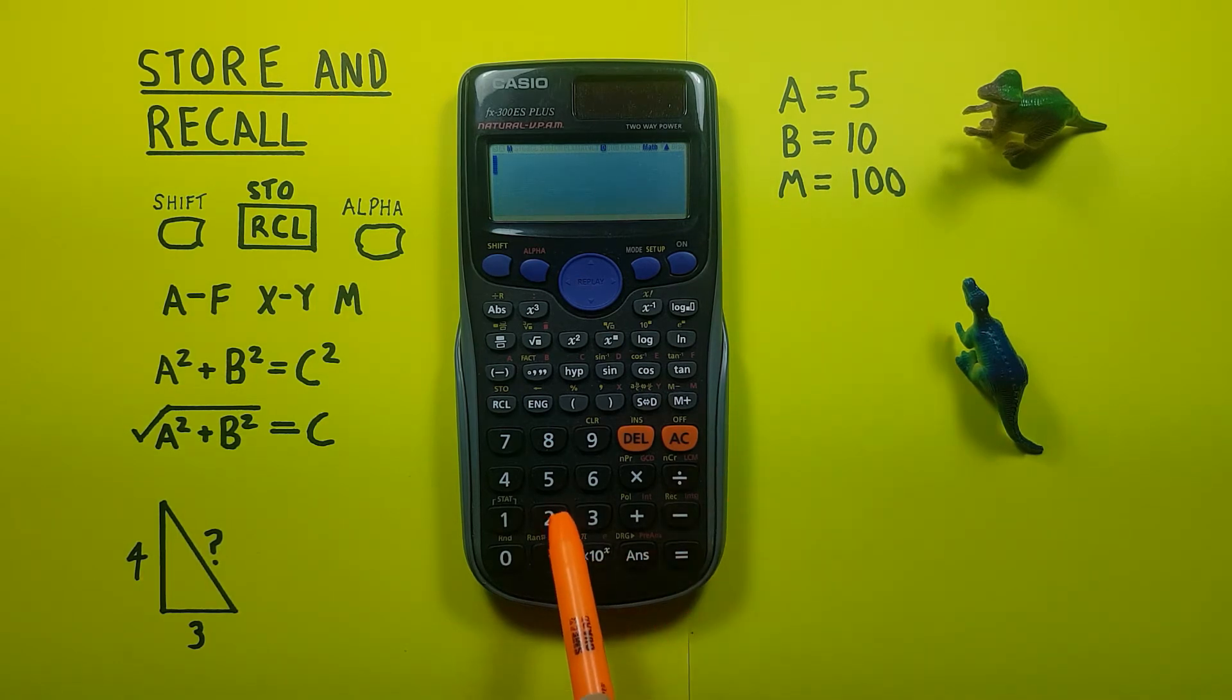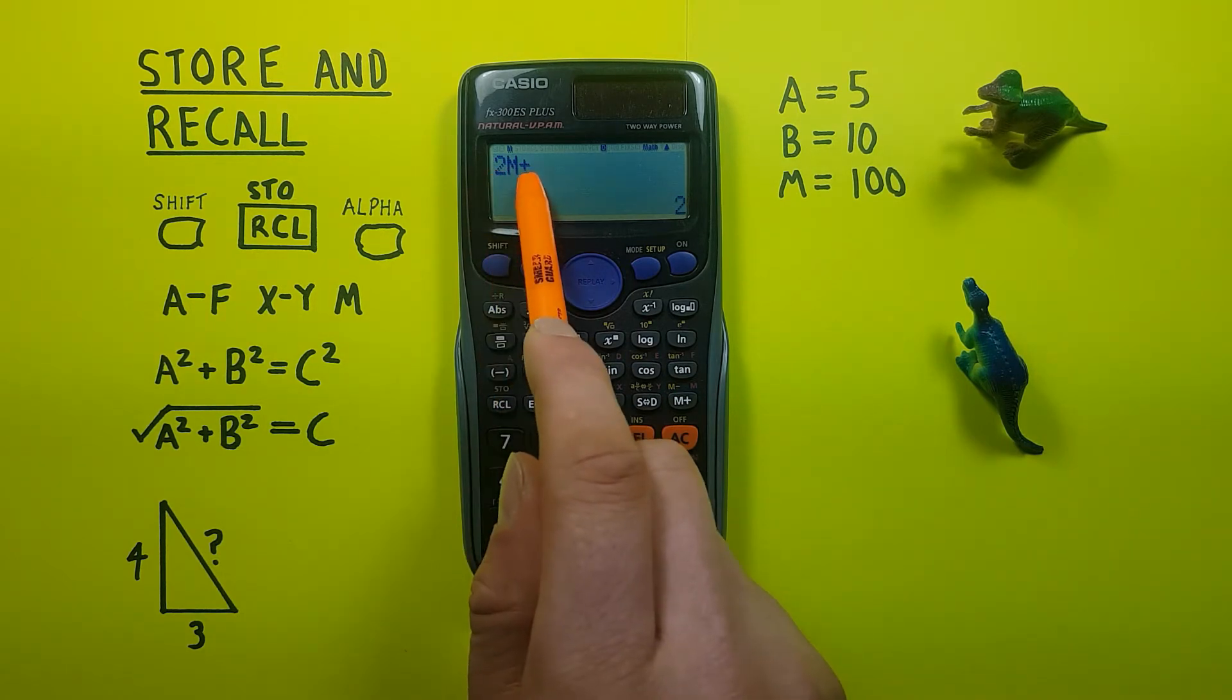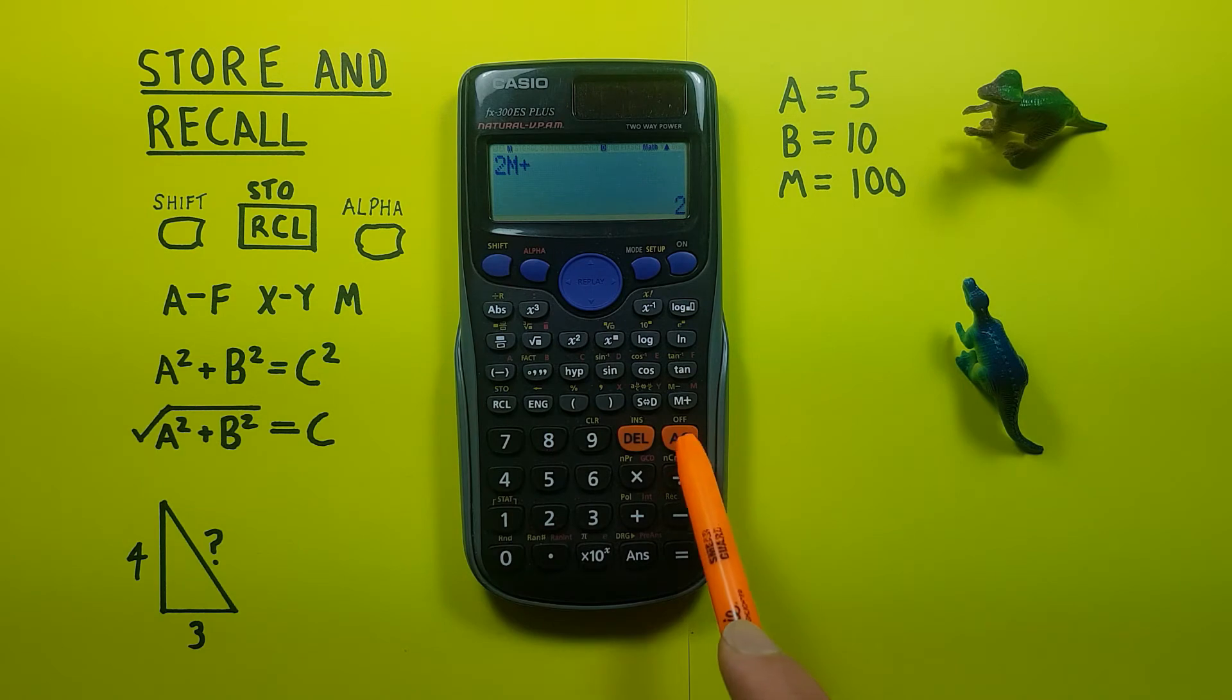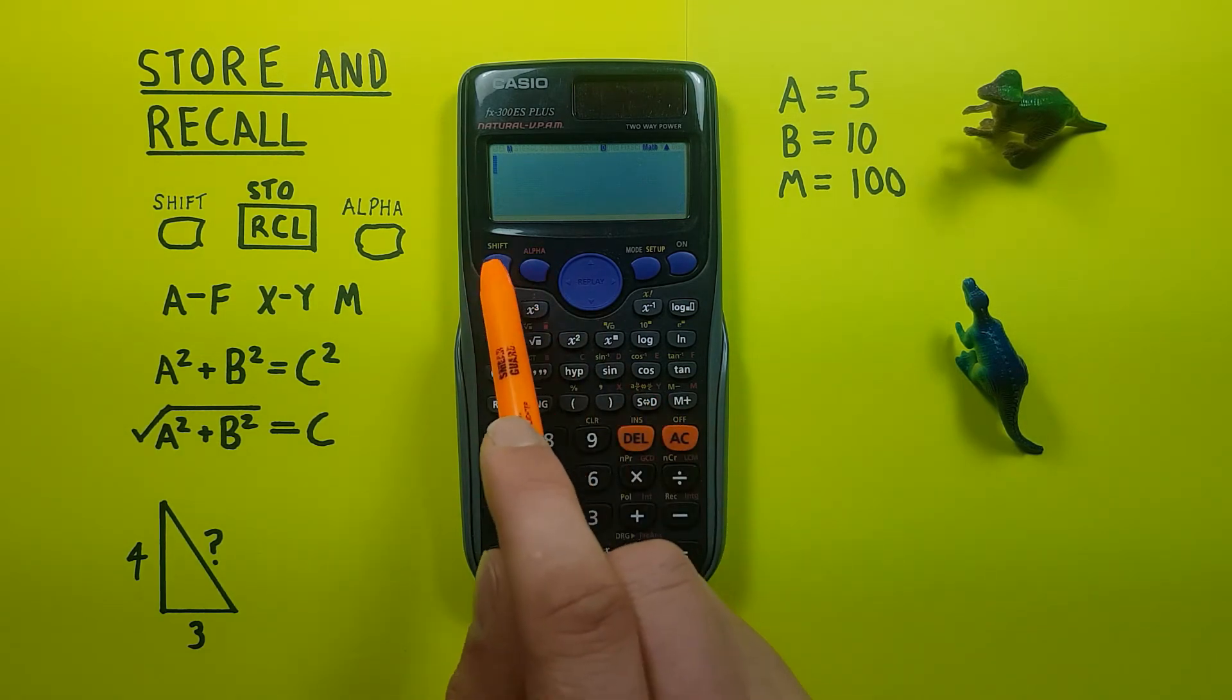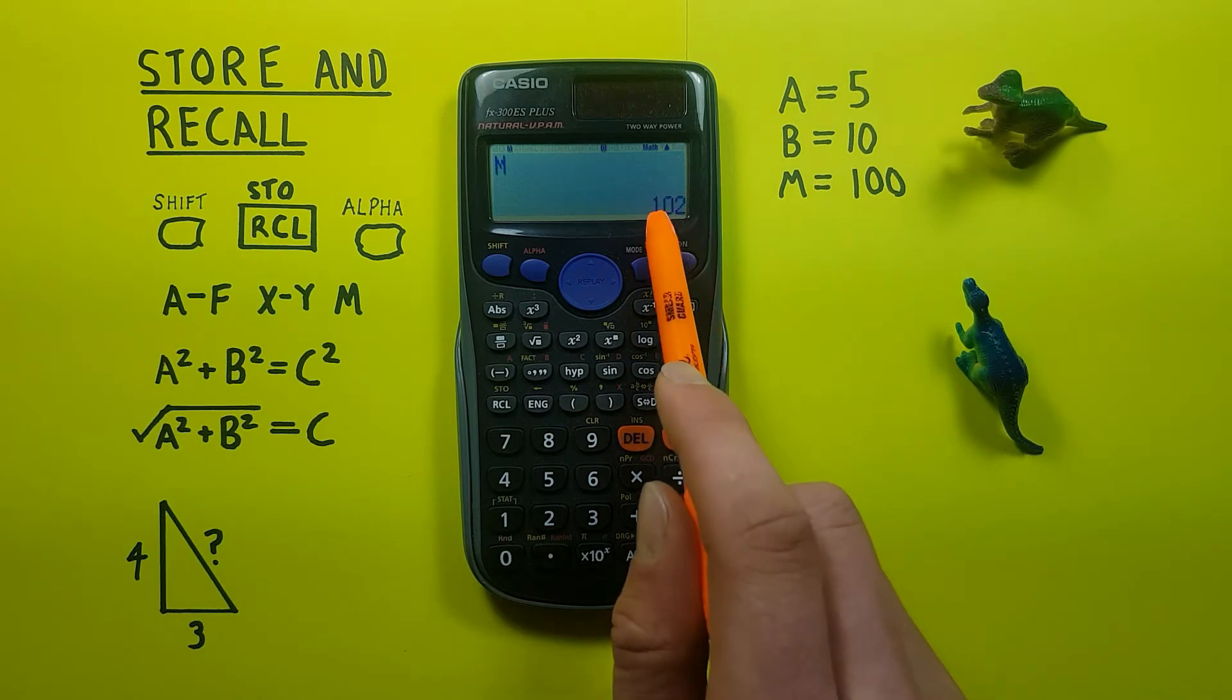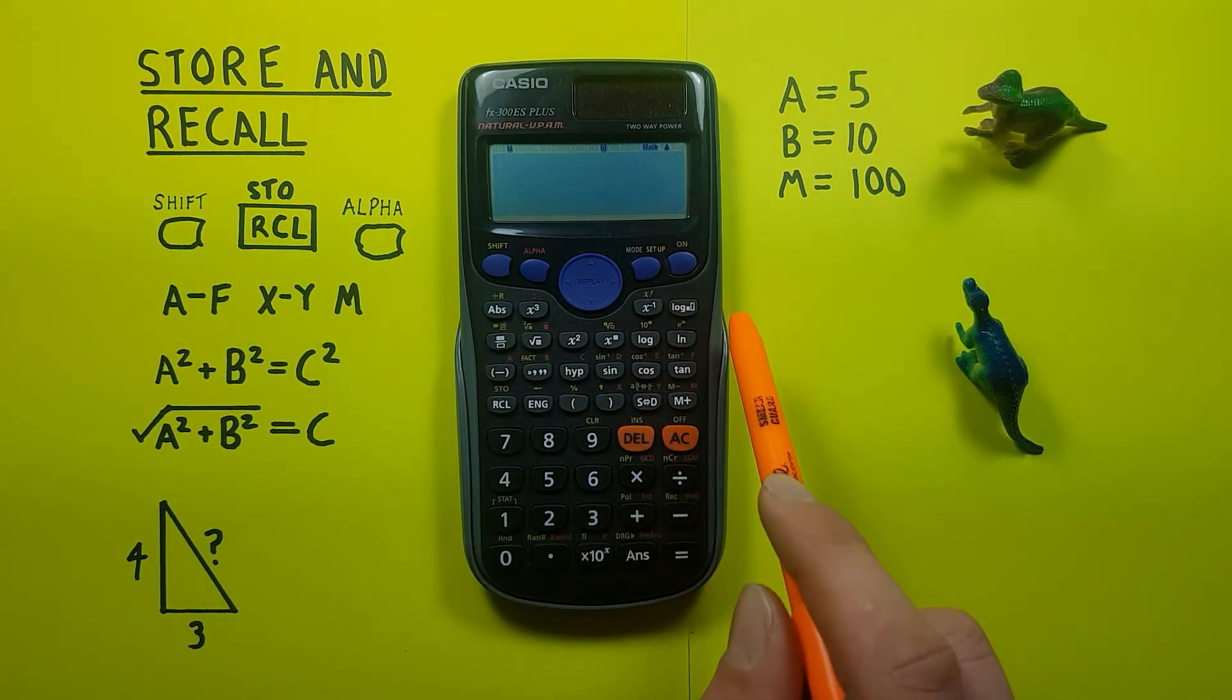So remember we have a hundred stored in there. If we just go 2 and then M plus, there we go, 2 M plus, this will add that 2 to our M value.